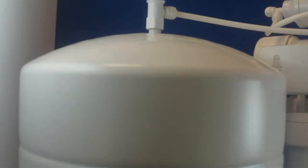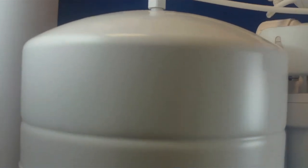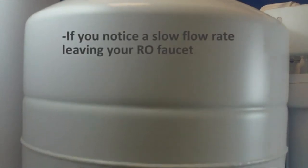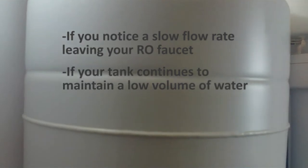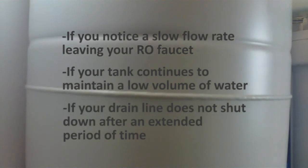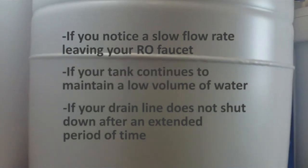There are a number of reasons why you might need to check the air pressure of your storage tank within your reverse osmosis system. If you notice a slow flow rate leaving your RO faucet, if your tank continues to maintain a low volume of water, or if your drain line is not shut down after an extended period of time, it is possible that you don't have the correct amount of air pressure within your storage tank.